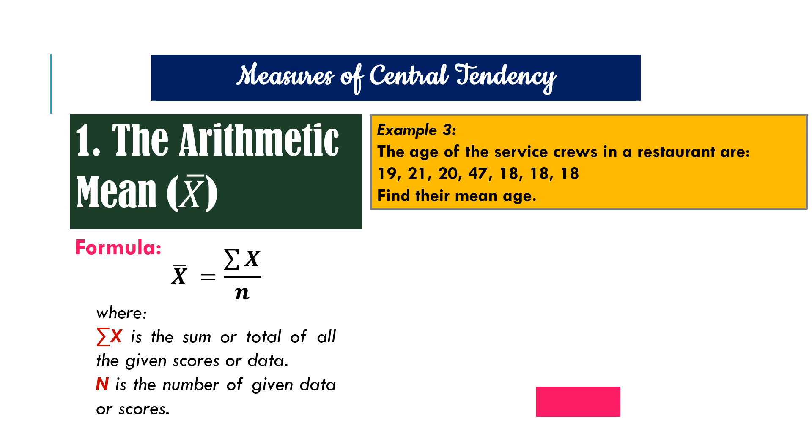Example 3. The age of the service crews in a restaurant are as follows: 19, 21, 20, 47, 18, 18, and 18. We have to find the mean age.